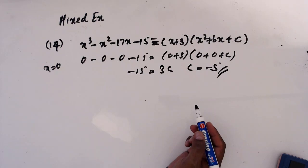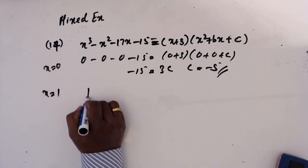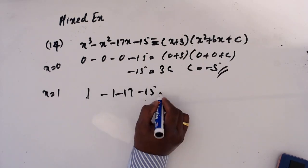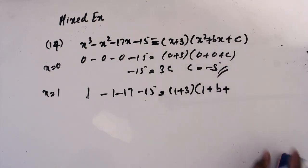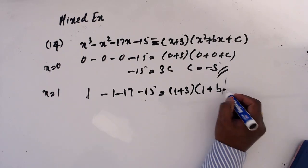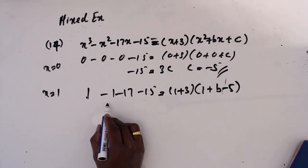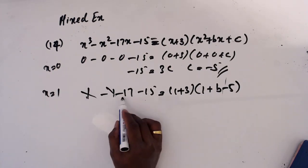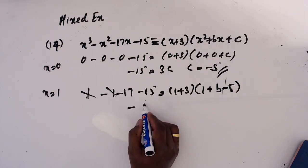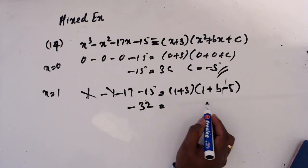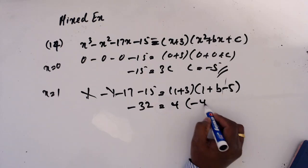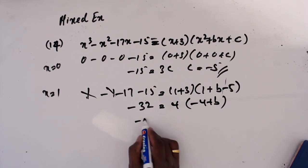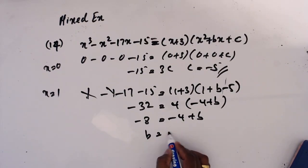Now we need to find one more value. Let's substitute x = 1: 1 - 1 - 17 - 15 = minus 32. And the right gives (1 + 3)(1 + b + c). With c = minus 5: 4 times (1 + b - 5) = minus 32, so 4(b - 4) = minus 32, then b - 4 = minus 8, giving b = minus 4.